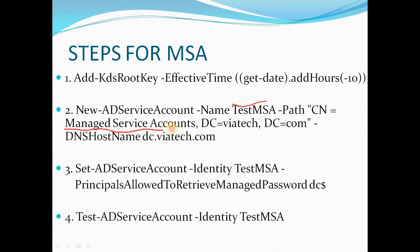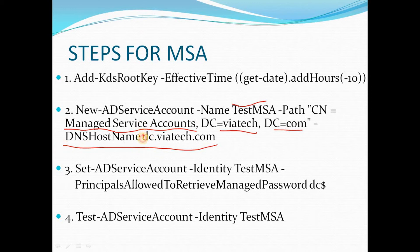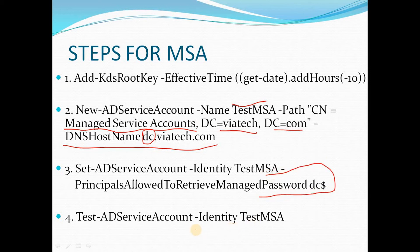The path includes the common name (CN) of the managed service account — in this case 'TestMSA' — the OU 'Managed Service Accounts', and the domain component, for example 'viatec.com'. You must also provide the fully qualified domain name (FQDN); if you miss this, the managed service account will not be created. In my case, the DNS hostname is dc.viatec.com. Lastly, you specify the password to be used on that computer.